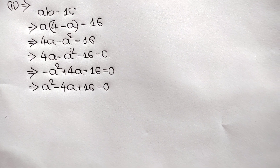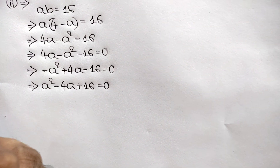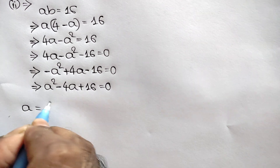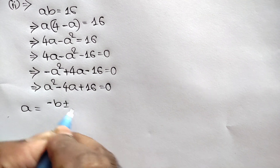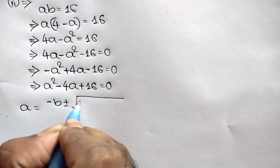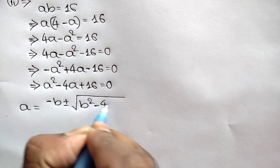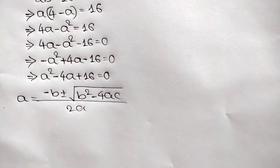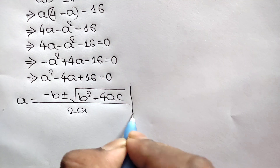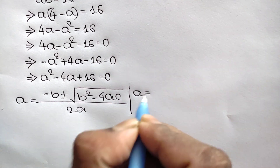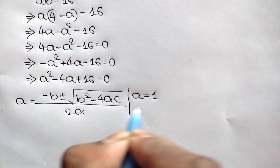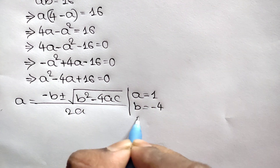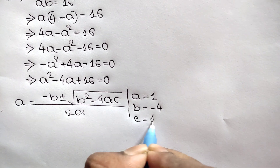Now we can apply the quadratic formula: a equals negative b plus or minus square root of b squared minus 4ac, all over 2a. Here a equals 1, b equals negative 4, and c equals 16.